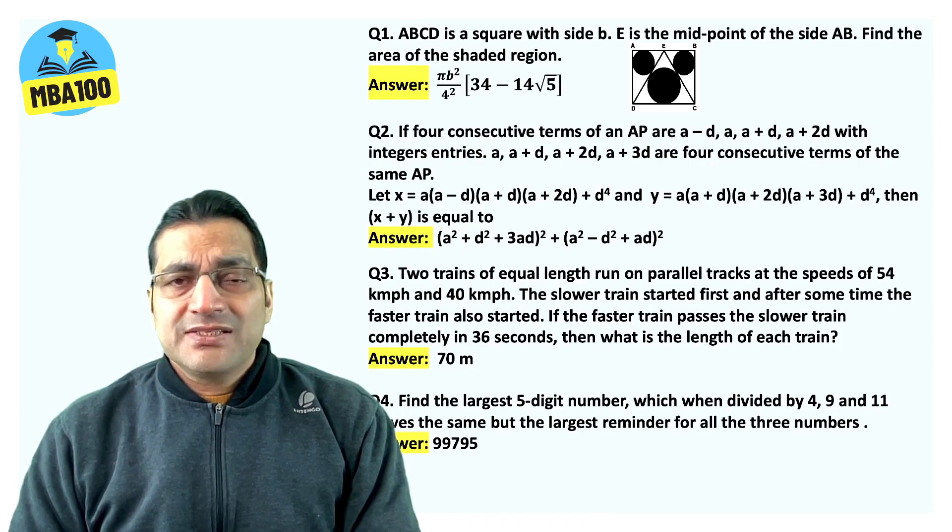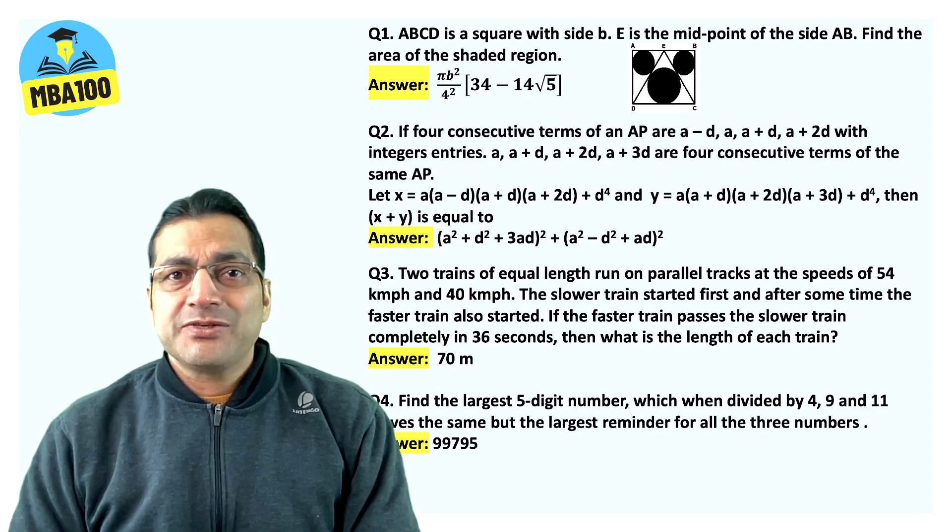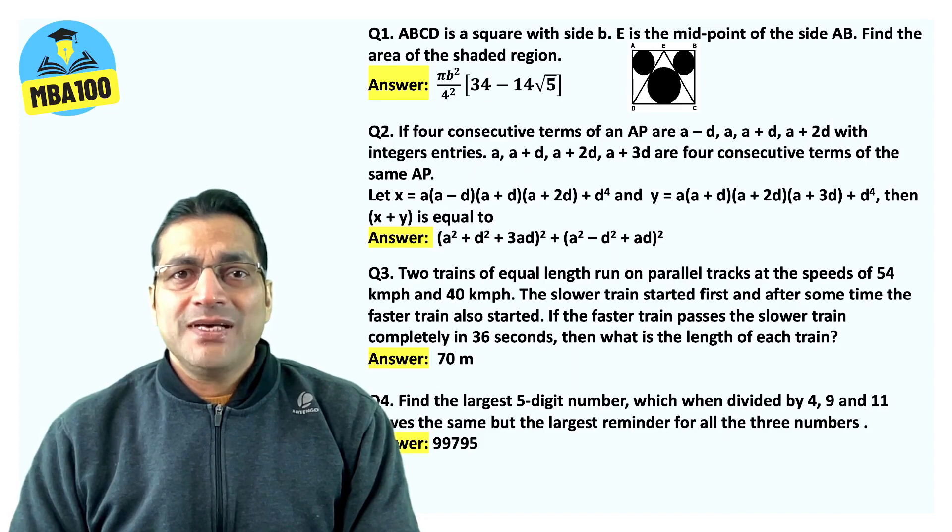Please try to recall these questions and check if you had got the right answers. ABCD square, the answer is B square divided by 16 into 24 minus 14 root 5.